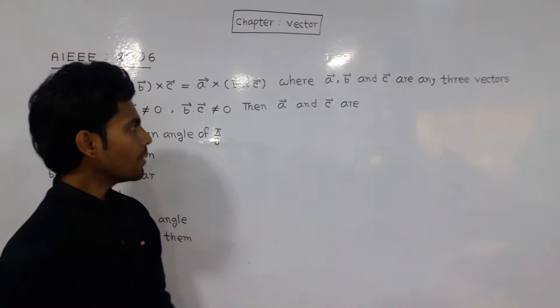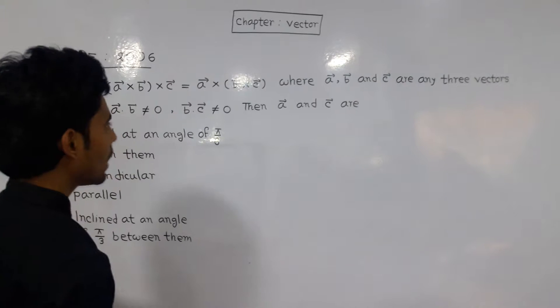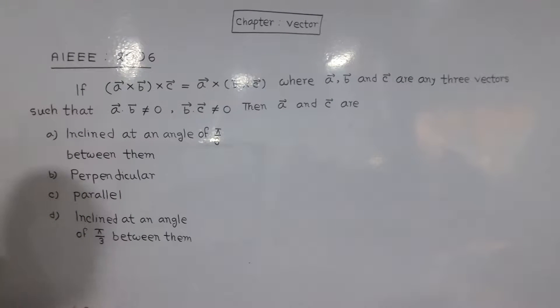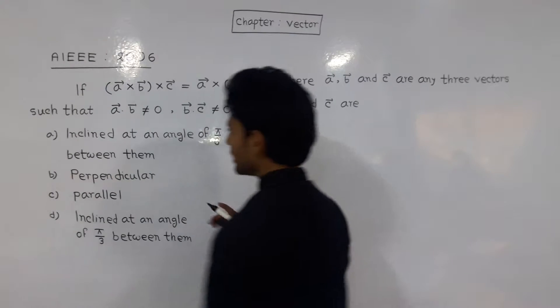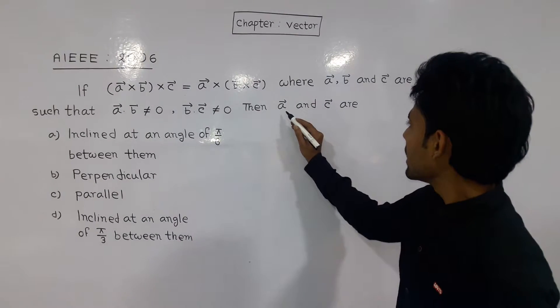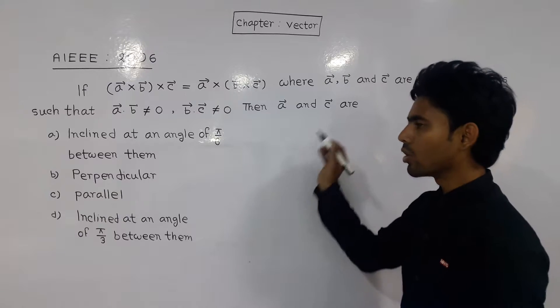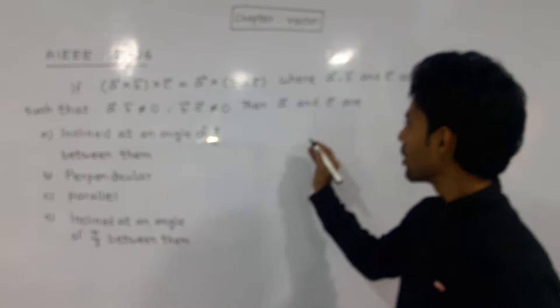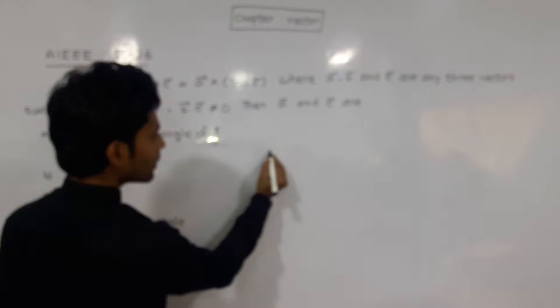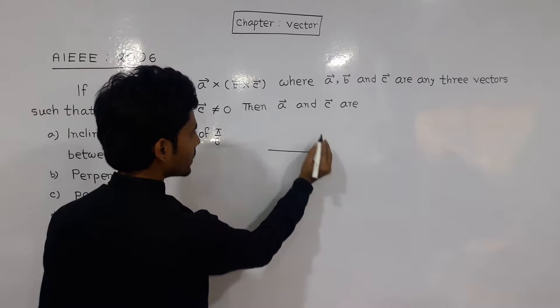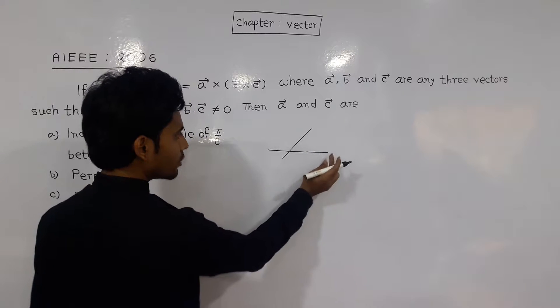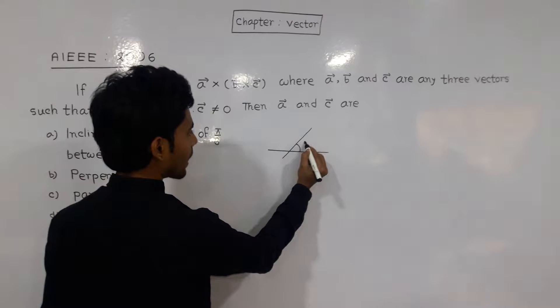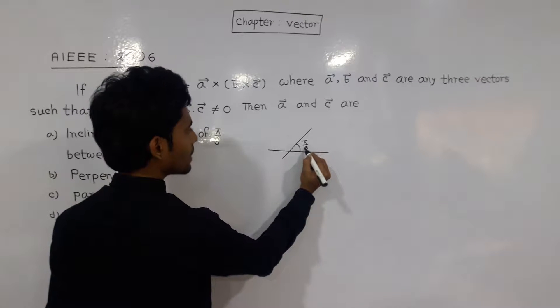The options are: a vector and c vector are inclined at an angle of pi by 6 between them. Option b: perpendicular. Option c: parallel. Option d: inclined at an angle of 5 pi by 6 between them.